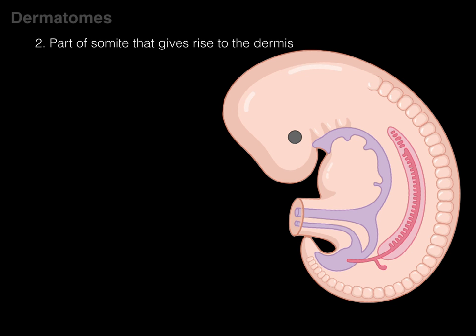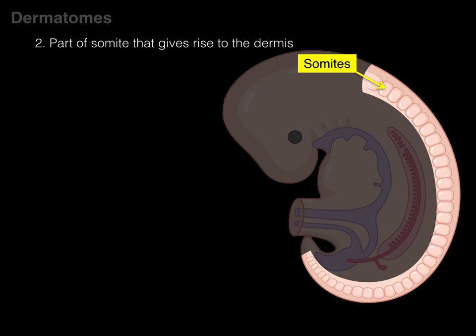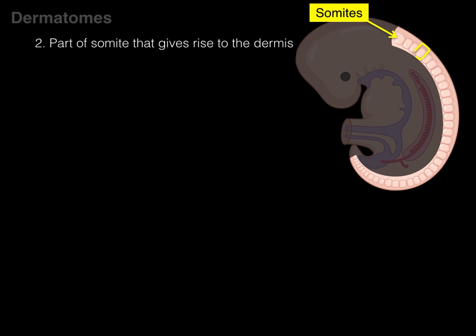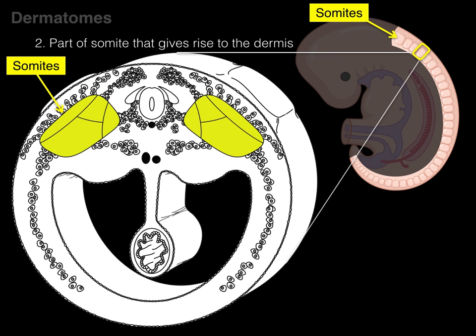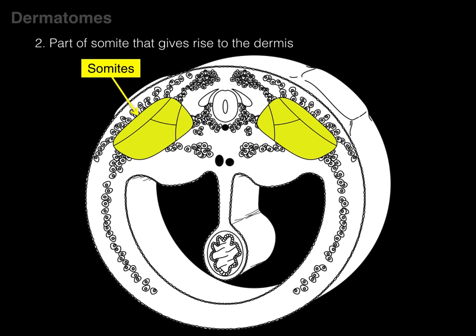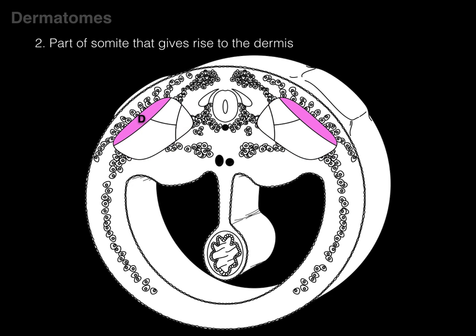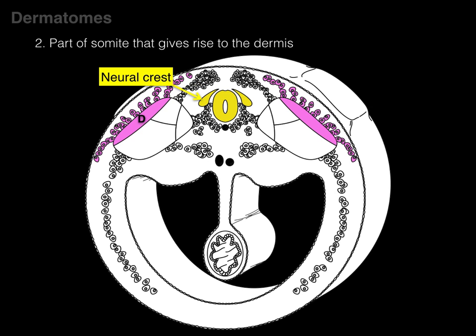The second definition is: a dermatome is part of a somite that gives rise to the dermis. There are all these somites, and in a cross-section of a developing embryo, the parts of the somites are the dermatome, myotome, and sclerotome. The dermatome cells migrate out and form the dermis of skin at that segmental level. The neural tube in this picture will become the spinal cord, and neural crest cells will become the dorsal root ganglia cells. Those dorsal root ganglion cells connect sensation from the developing dermis to their associated spinal cord level.